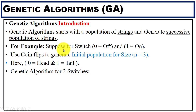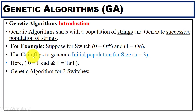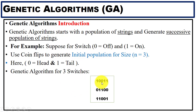Suppose for a switch value: if the switch is on, we consider it one; if the switch is off, the value is zero. We will initialize the population for three switches using a coin flip — head is zero, tail is one. You can see the initial population for three switches generated in this way.